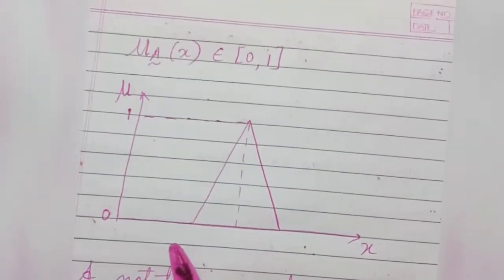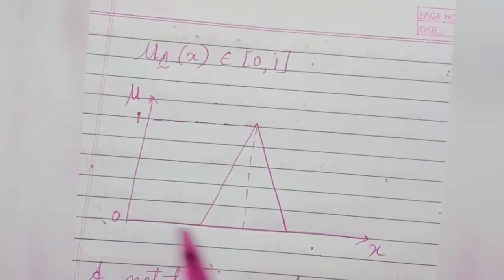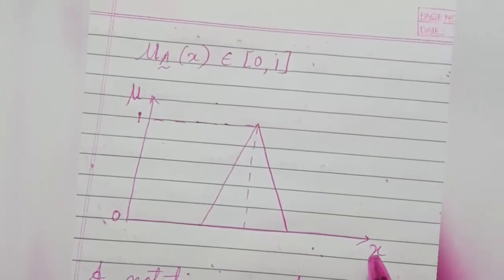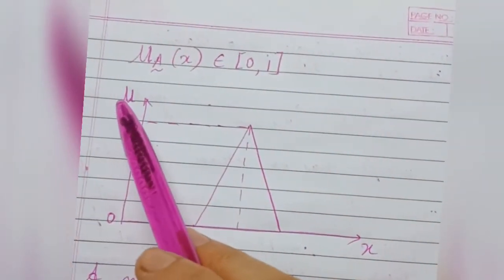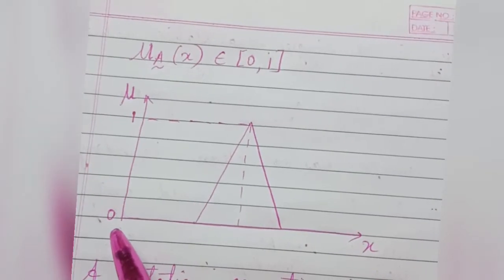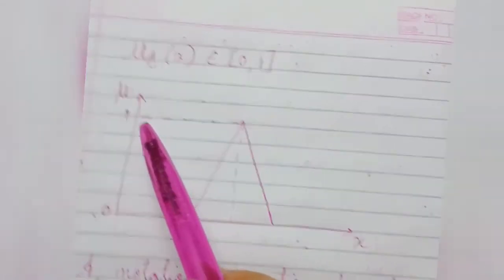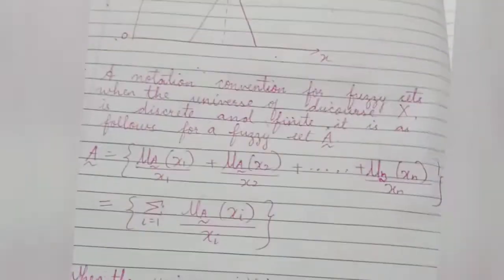When the diagram is in this way, this is 0, this is X that is the element, and this is μ. This is the membership from 0 to 1.